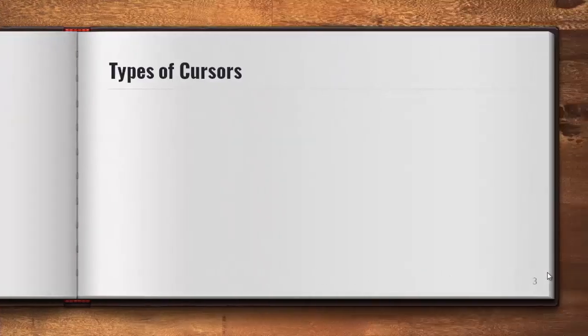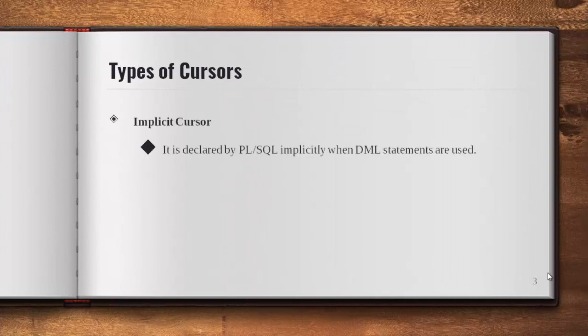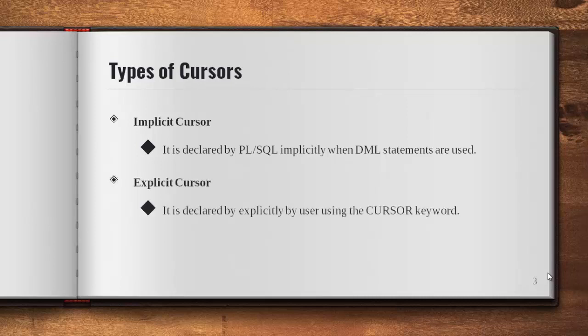There are two types of cursors. The first type is the implicit cursor — as the name states, the cursor is implicit, so we need not declare it. By default PL/SQL and MySQL have this cursor, used automatically when you use DML statements such as INSERT, DELETE, UPDATE, or SELECT. The second type is the explicit cursor, where the user has to create the cursor on their own using the keyword CURSOR. This video focuses on explicit cursors.